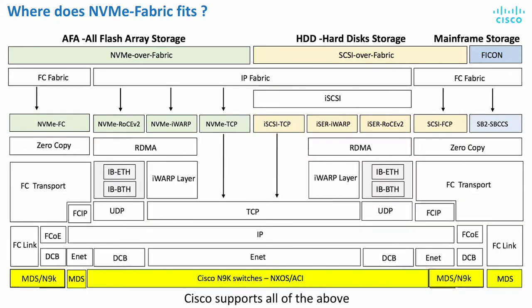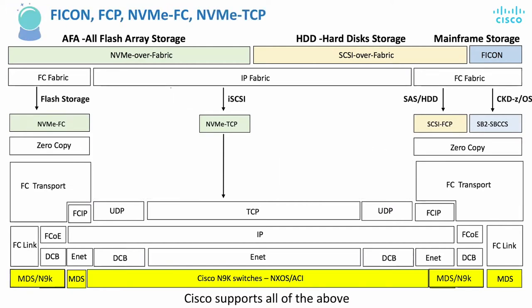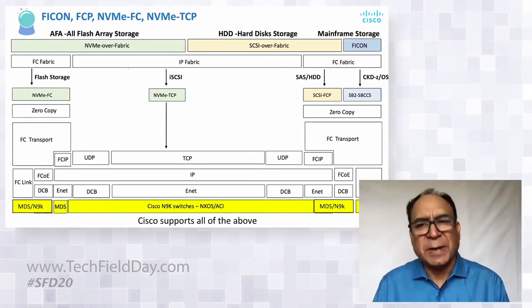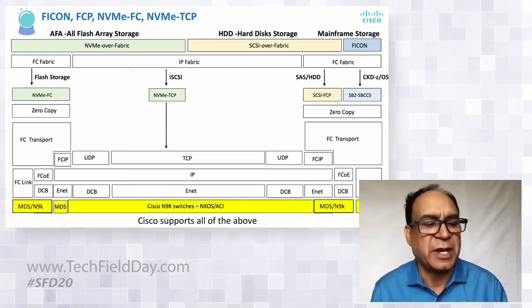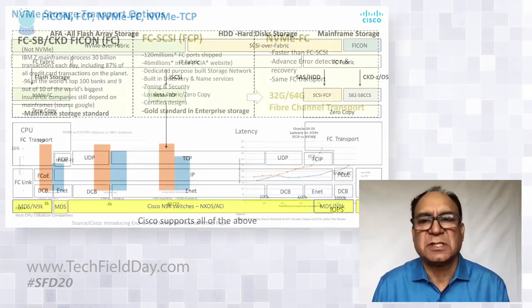Cisco is supporting all of these protocols today. We have the MDS product line and the Nexus 9000 product line, which supports all of these protocols. Mainframe guys with their SBB, SBC, and CKD commands will continue to utilize Fibre Channel transport for their z/OS operating systems. Hard drives will continue to be there — I think over 50% of disks are still spinning disks versus flash, though flash is catching up rapidly as prices go down with QLC and other technologies. SAS drives will still be there, so SCSI FCP will continue, and with NVMe, we'll slowly start catching on with all-flash arrays.